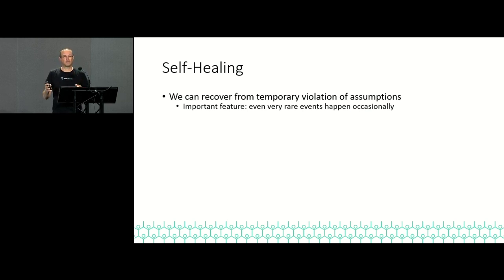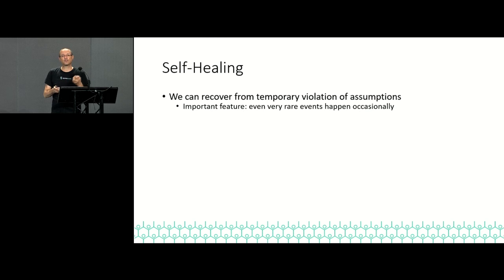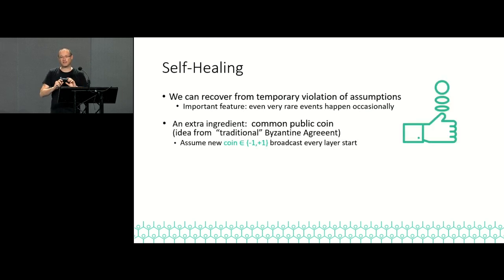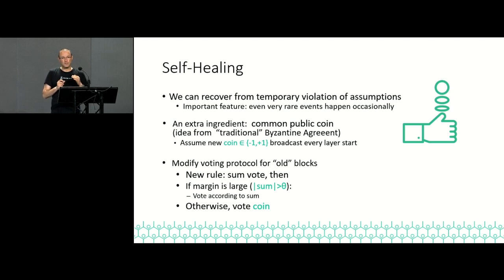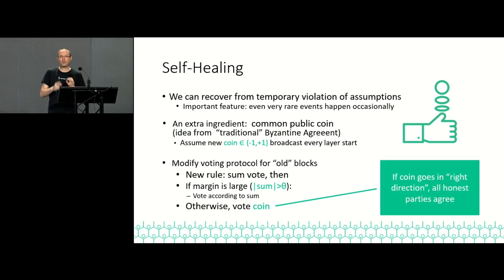Another very important property we get is self-healing. If something bad does happen — everything is proved with high probability like 2 to the minus 40, so bad things can still happen over many years — the system can actually recover from a temporary violation of assumptions. We add an ingredient to the Tortoise protocol taken from traditional Byzantine agreement: a common public coin published at the beginning of every layer. We modify the voting rule so instead of just looking at the majority, we have three ranges: if there's a large majority, use the majority; if it's small, use the coin. With high probability, within only a few layers, everybody will agree. So we get self-healing as well.